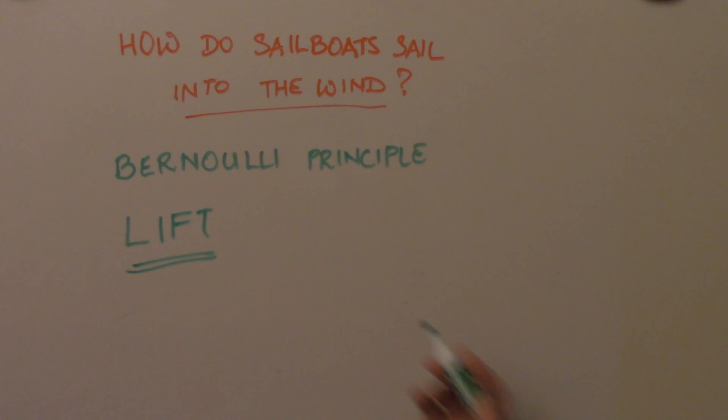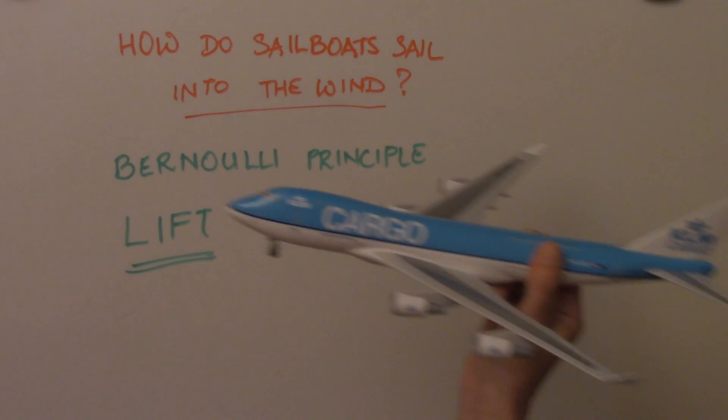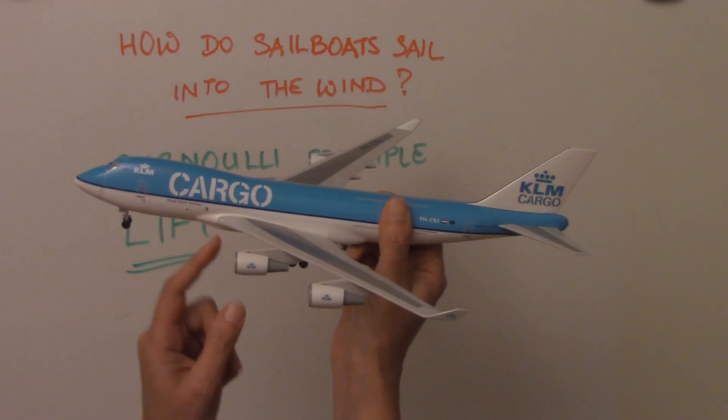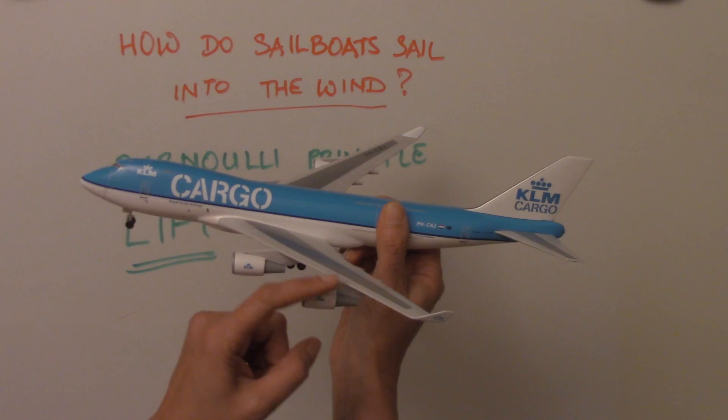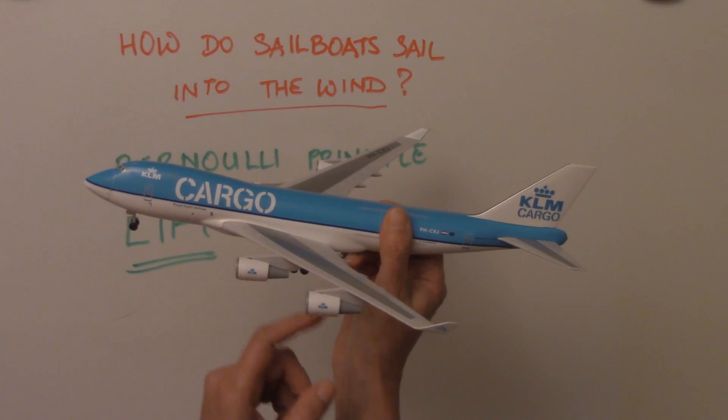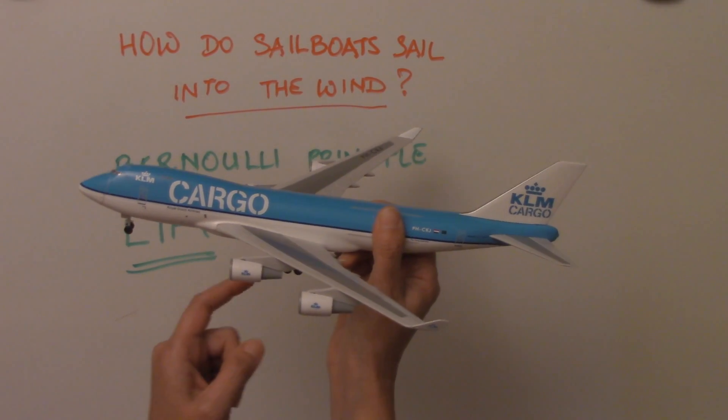Lift is one of the forces an airplane uses to fly. It pushes objects up against gravity. Lift occurs because of a change in pressure between the top and bottom of a surface.